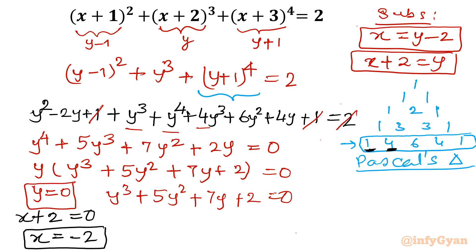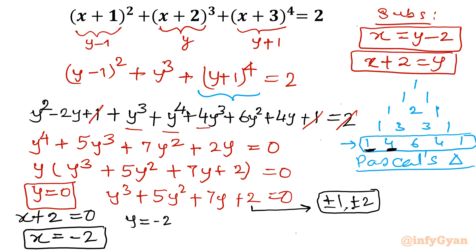Now our target is the cubic equation y³ + 5y² + 7y + 2 = 0. You can apply the remainder theorem, synthetic division, long division, or trial-and-error. I am going to use the synthetic division method. Using the rational root theorem, the possible rational roots are the factors of +2 over the leading coefficient: ±1 and ±2.